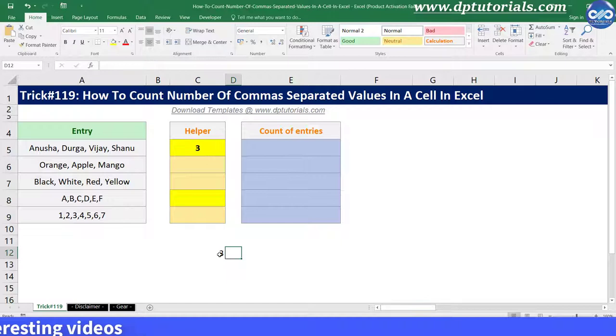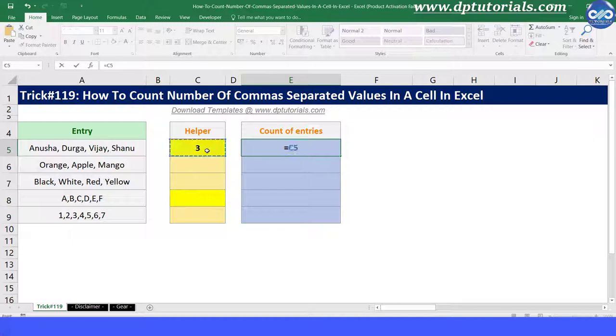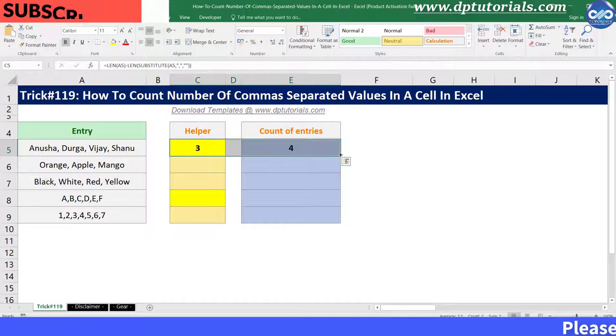Now in cell E5, you can add 1 to this result to get the number of values in cell A5 like this. Now drag this formula till the last row and you can observe the respective results like this.